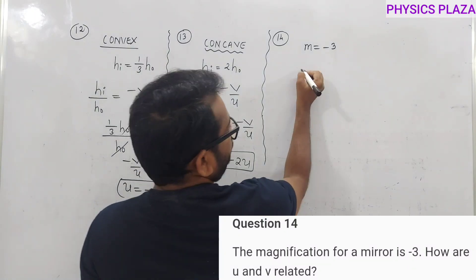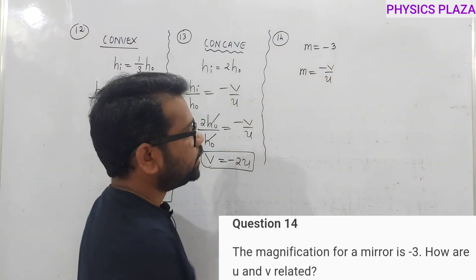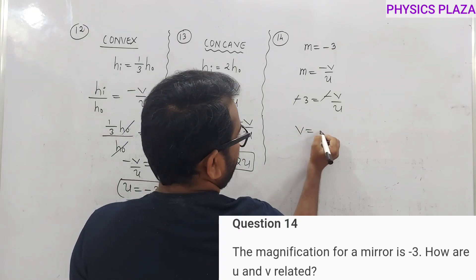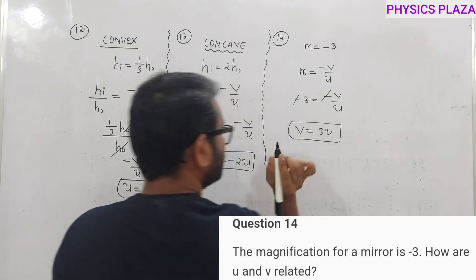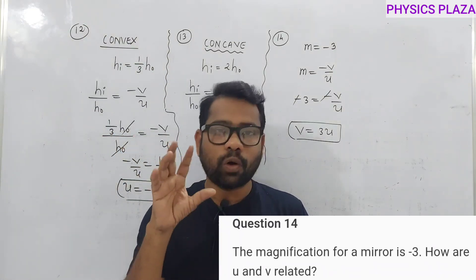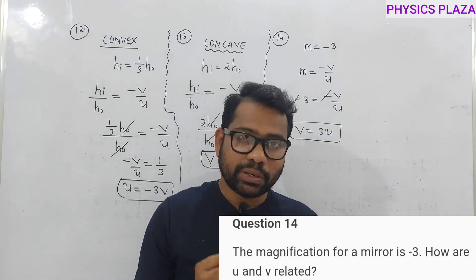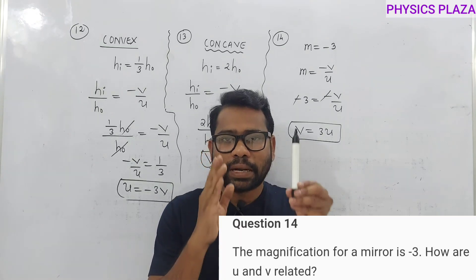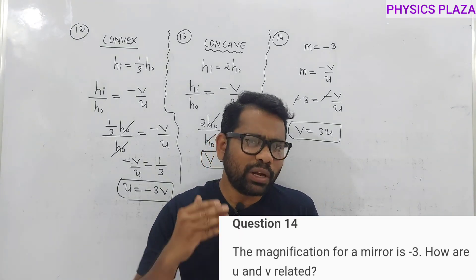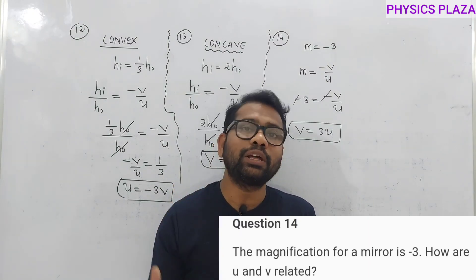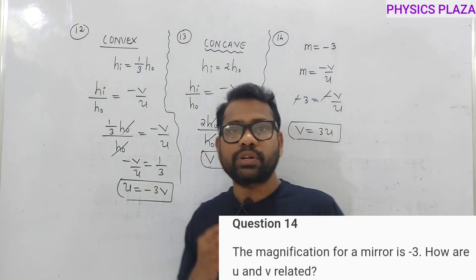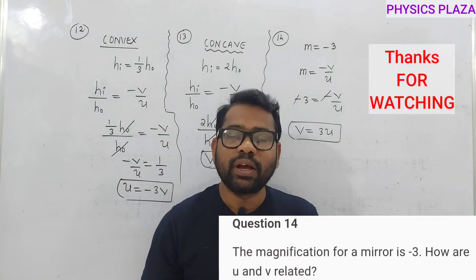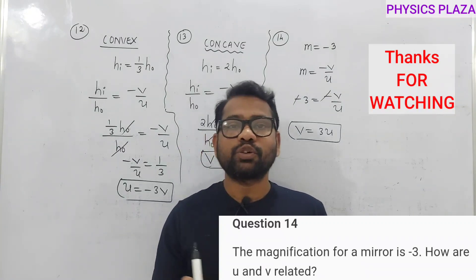Fourteenth numerical: linear magnification m = −3. Find the relation between image distance and object distance. We know m = −v/u, so −3 = −v/u, giving v = 3u. That concludes these numericals. Remember: before solving any numerical on spherical mirrors, sign convention is the most important thing. Concave mirror focal length is always negative; convex mirror focal length is always positive. Read the textbook first, then refer to videos or guides.